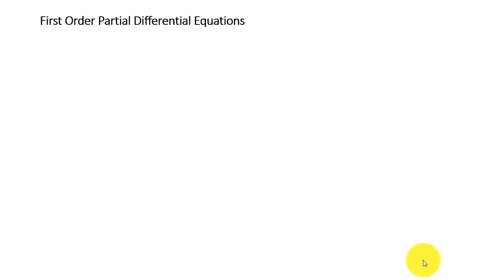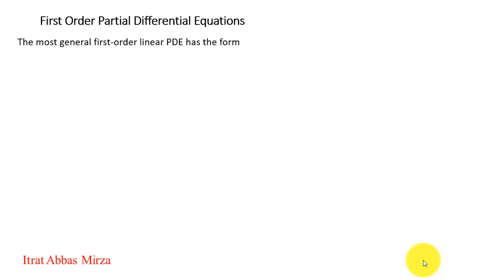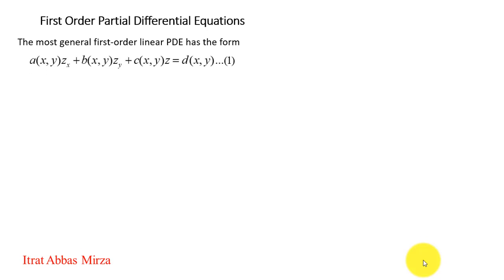Now we will focus our attention only on first order partial differential equations. The most general first order linear partial differential equation has the form: a(x,y) z_x plus b(x,y) z_y plus c(x,y) z equal to d(x,y) — call this equation one. We will try to learn how to solve this equation with the help of the method of characteristics. I will try to elaborate how we can derive the method of characteristics, and in the next video tutorial I will explain how to solve first order linear partial differential equations.